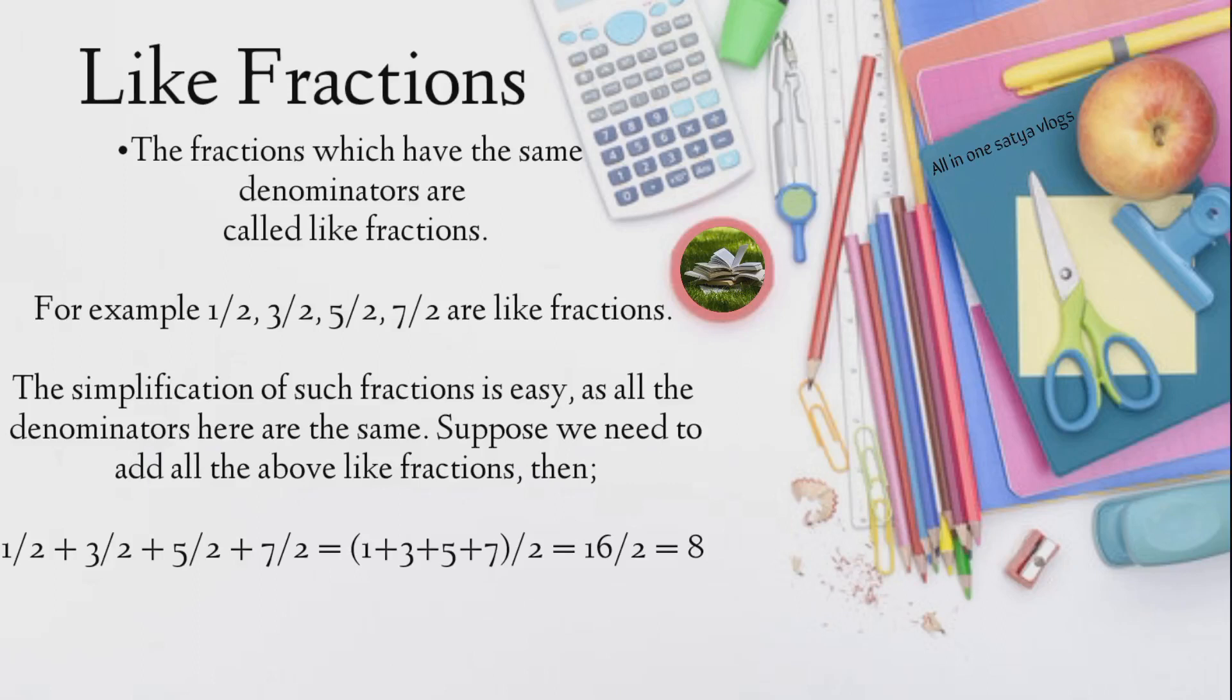The simplification of such fractions is easy, as all the denominators here are the same. Suppose we need to add all the above like fractions, then, 1/2 + 3/2 + 5/2 + 7/2 = (1+3+5+7)/2 = 16/2 = 8.